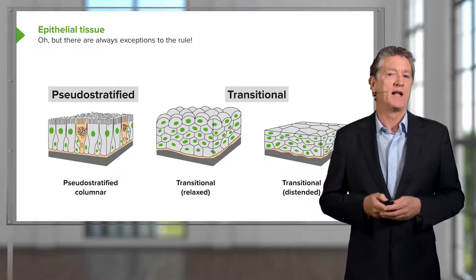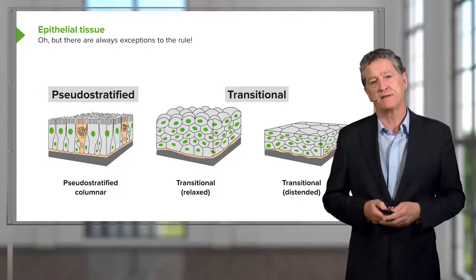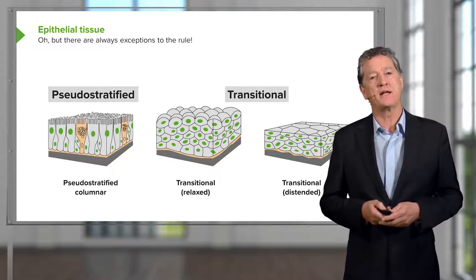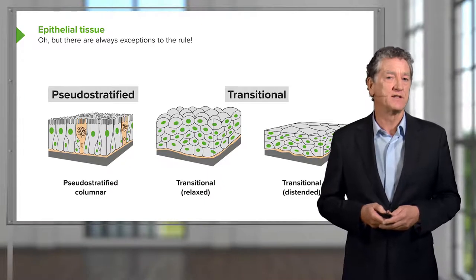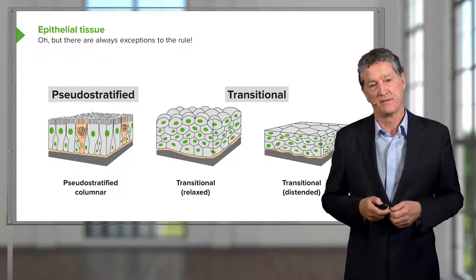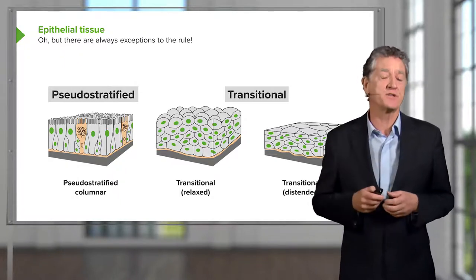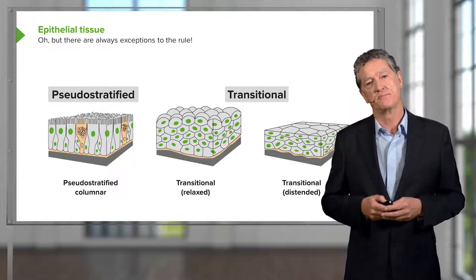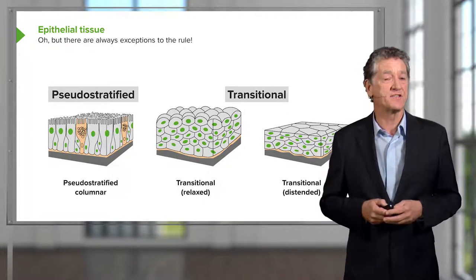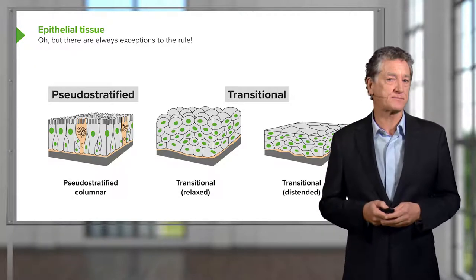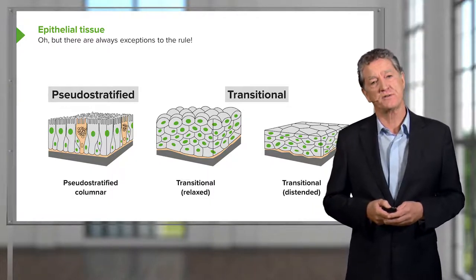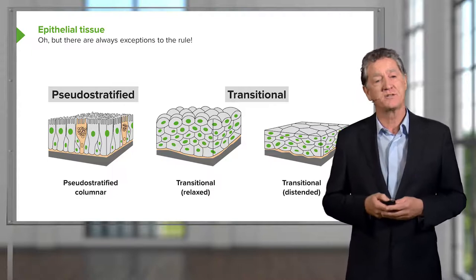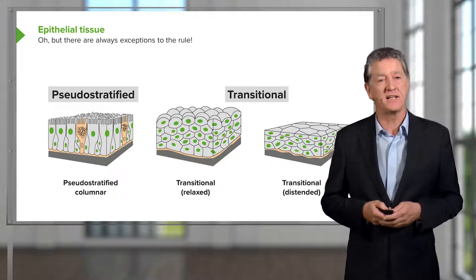There are a few unusual epithelia. In pseudo-stratified epithelium, the nuclei appear at different levels, giving the impression of stratification. But in fact, using an electron microscope, you see all cells sit on the basement membrane — so although it appears stratified, it isn't. It's simple, hence pseudo-stratified. Sometimes the surface of these cells has specialisations such as cilia or microvilli, and we might call it pseudo-stratified ciliated epithelium.